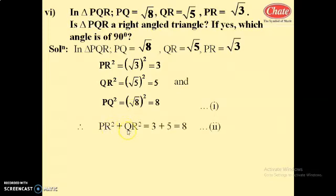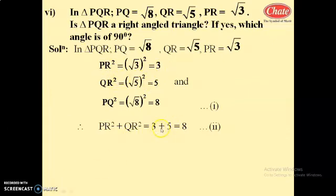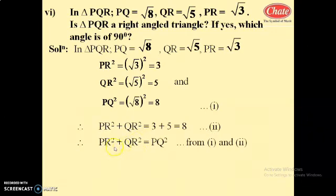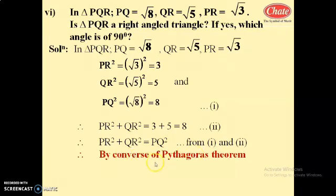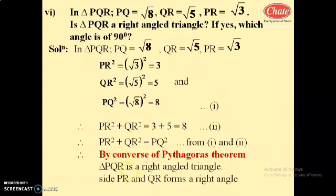PQ squared equals root 8 squared, which is 8 — this is equation 1. And PR squared plus QR squared: PR squared is 3 and QR squared is 5, so 3 plus 5 is also 8 — equation 2. From equations 1 and 2, the square of the largest side equals the sum of squares of the remaining two sides: PR squared plus QR squared equals PQ squared.